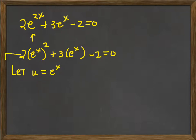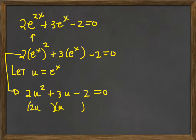Then the equation I want to solve can be written as 2u squared plus 3u minus 2 equals 0. Now we have this quadratic again that I'm hoping factors. Let's see if it does. So 2u and u and I need a 2 and a 1. So I'm going to put a 2 there and a 1 there.